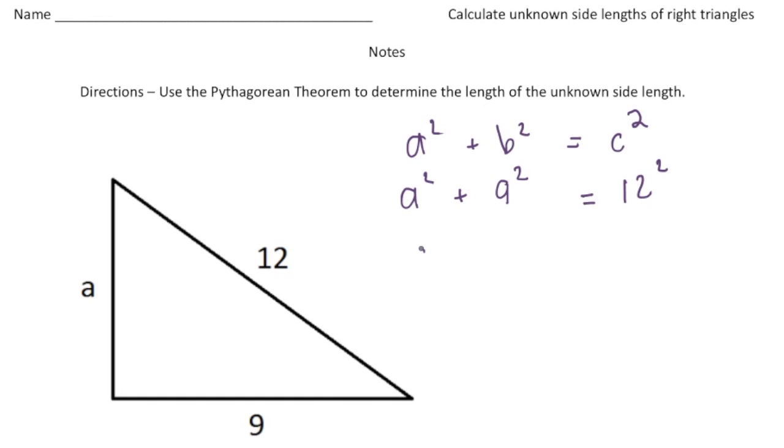So it's going to be a squared plus, well 9 squared is 81, and it's going to equal 144. And now we need to get the a squared by itself so I'm going to take away 81 from both sides.